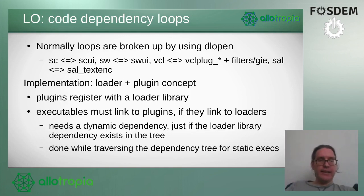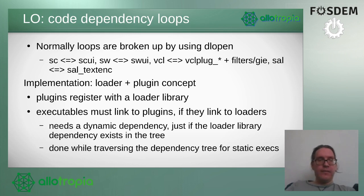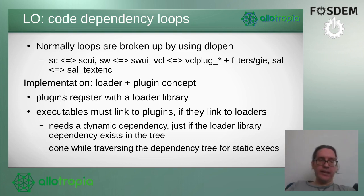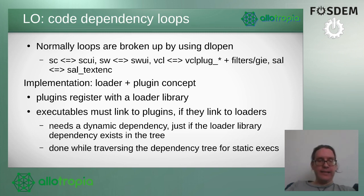I also found that LibreOffice has some interesting dependency loops in the code — for example, Calc has dependencies on the Calc UI library, and the Calc UI library depends on the Calc library. This is normally broken up by the main module DL-opening the other one, but we can't do that here. So what we use is we define the main module as a loader and everything else as a plugin. Every plugin can declare itself a plugin of the loader library, and when we traverse the whole dependency tree, we simply check the final resolution — if it contains any loader library dependencies, we add the plugins to the final link stage. This takes some time but there's really no other way around it.